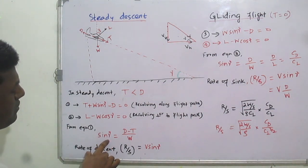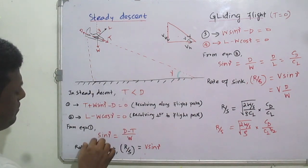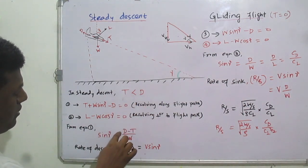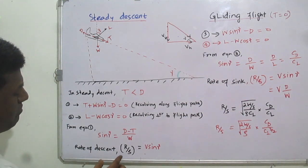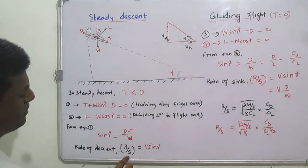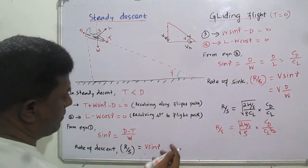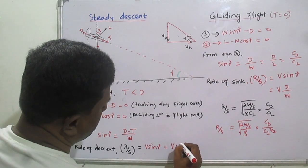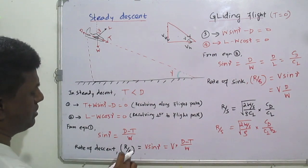Resolving perpendicular to the flight path gives: L − W cos γ = 0. From these two equations we find sin γ = (D − T) / W, since drag is greater than thrust in descent. The rate of descent, also called rate of sink, equals V sin γ, which we can write as V × (D − T) / W.